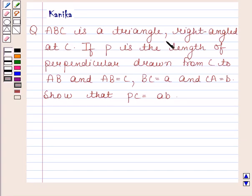The question says: ABC is a triangle right angled at C. If P is the length of perpendicular from C to AB, and AB equals C, BC equals A, and CA equals B, then show that PC equals AB.